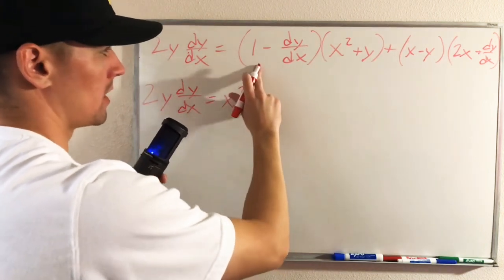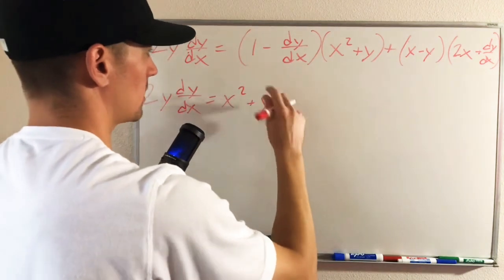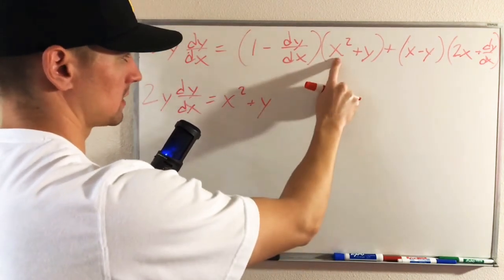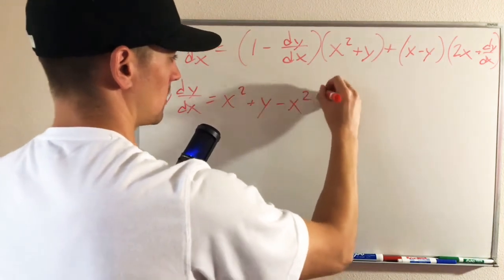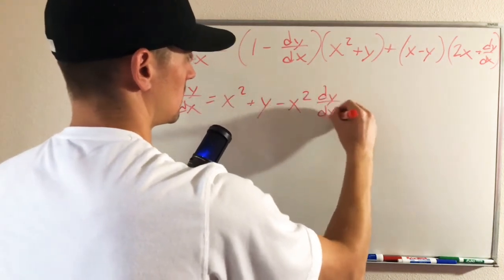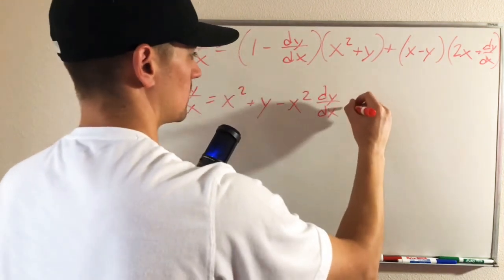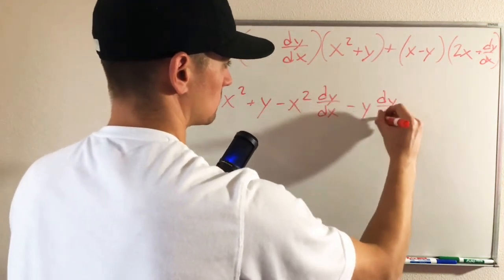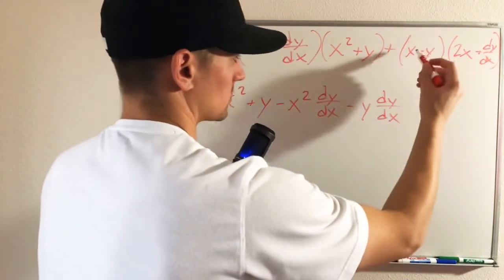And then 1 times y is just going to be plus y. And then negative dy/dx times x squared is going to give us minus x squared dy/dx. And minus dy/dx times y is going to give us minus y dy/dx.